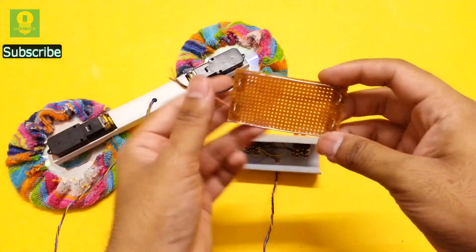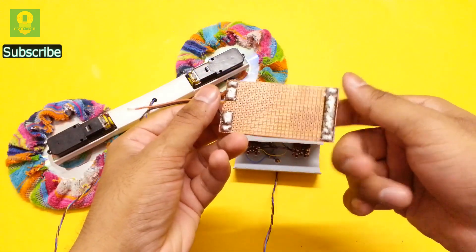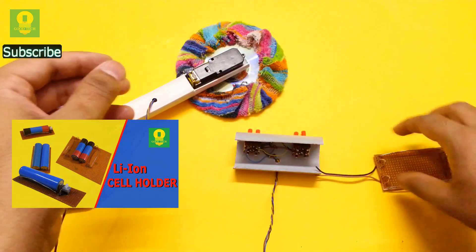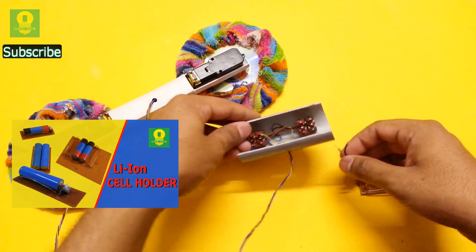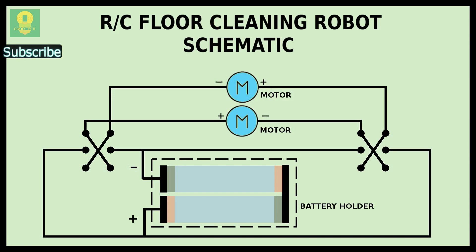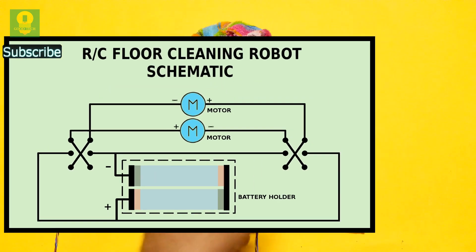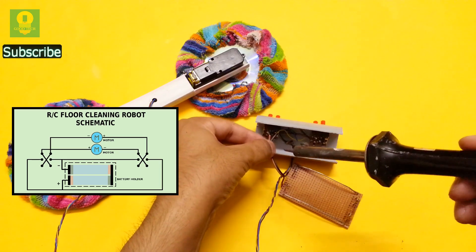Take a lithium ion cell holder we made in an earlier video. You can click on the annotation link or the card to watch the video to make a cell holder yourself at home. Refer to the schematic and connect the cell holder to the circuit.